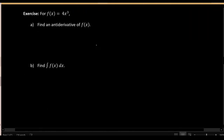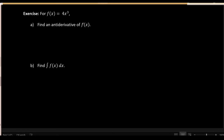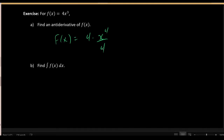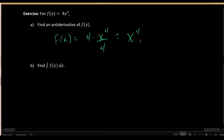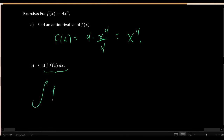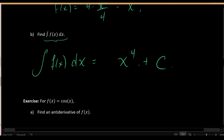Using this theorem, let's go ahead and find first any antiderivative of 4x cubed, and then find the integral of 4x cubed. To find an antiderivative, I'll use the power rule formula: increase the power by 1 and then divide by the increased power. That gives us x to the 4th as an antiderivative of f of x. The integral — the description of all possible antiderivatives — is x to the 4th power plus a constant C.